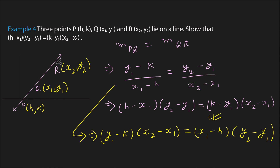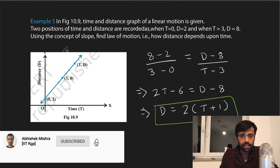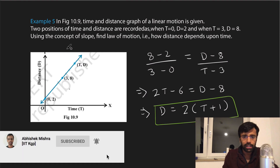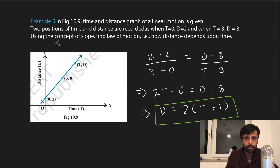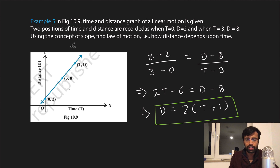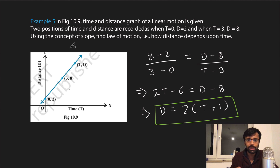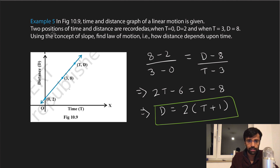So the concept is simple: for three collinear points, the slope between any two pairs of points must be equal. These examples are from the NCERT book — simple examples first to build confidence, and then we solve all the exercise problems.